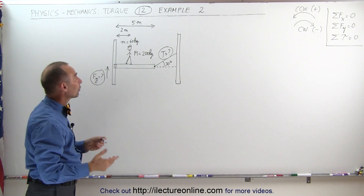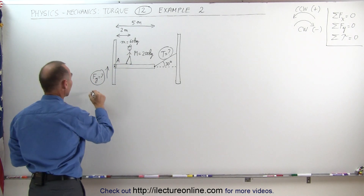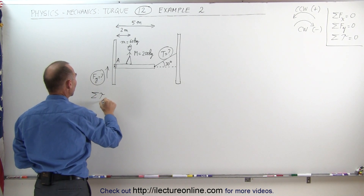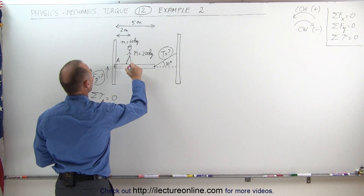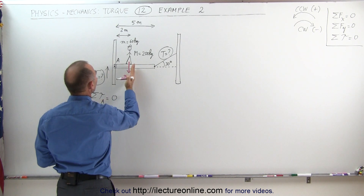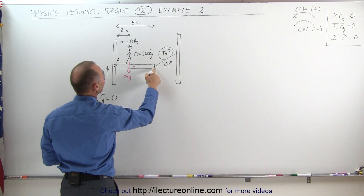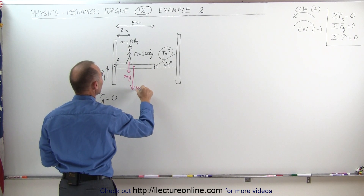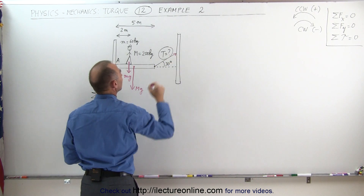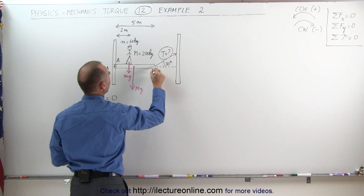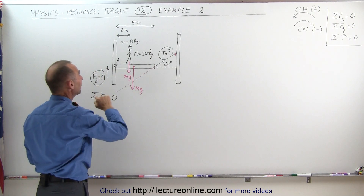To find the tension, we pick pivot point A at the left hinge and apply the equilibrium condition: since everything is in equilibrium, the sum of all torques about point A must equal zero. Let's find all the torques causing a torque at point A — there should be three of them.